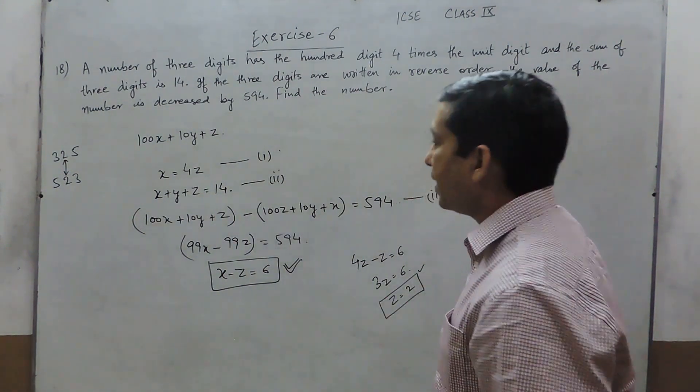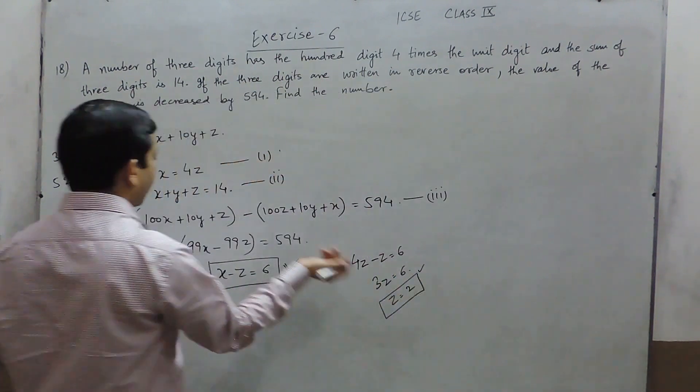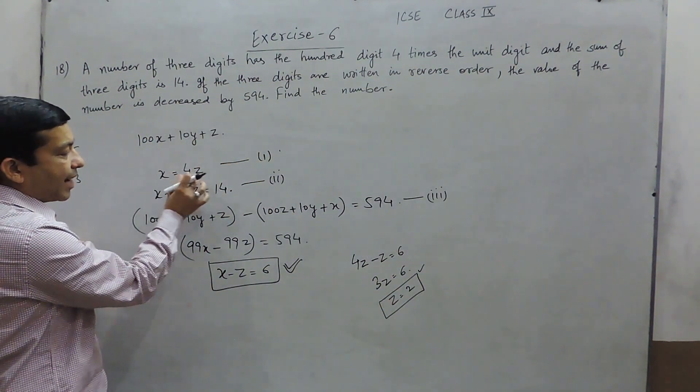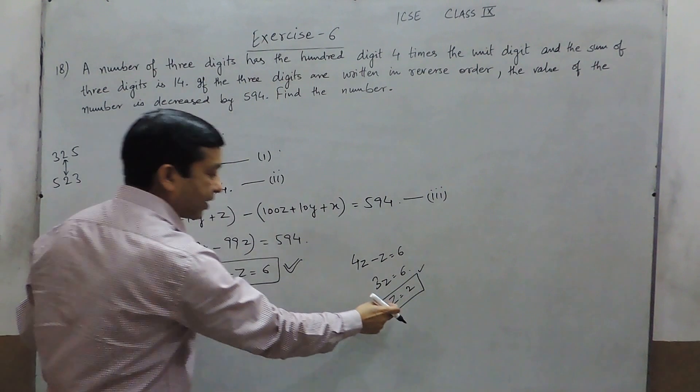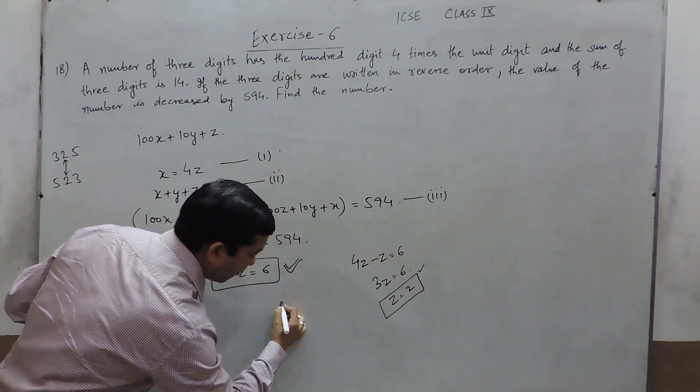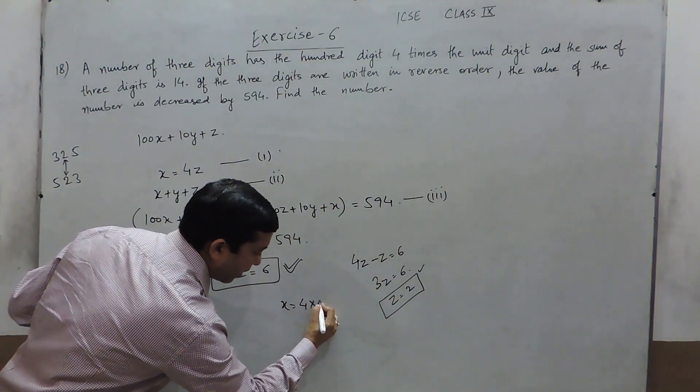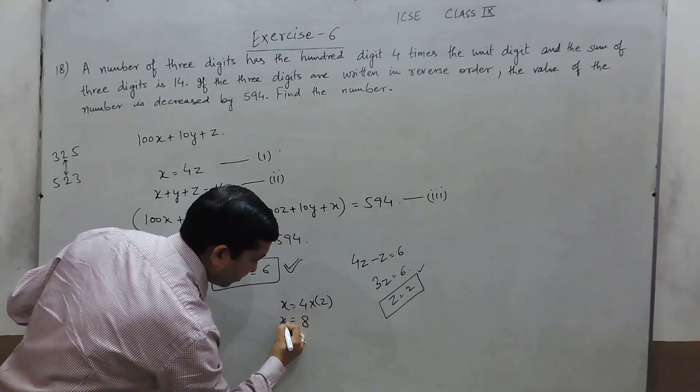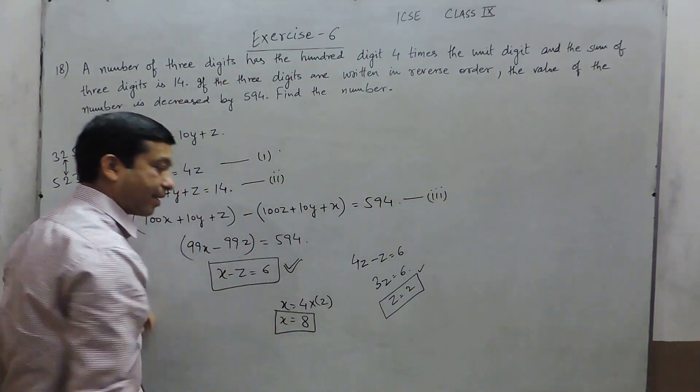Now it is very clear that the value of z is 2. We know the value of x is 4z, and when z equals 2, the value of x will become 4 multiplied by 2 equals 8. So the value of x becomes 8.